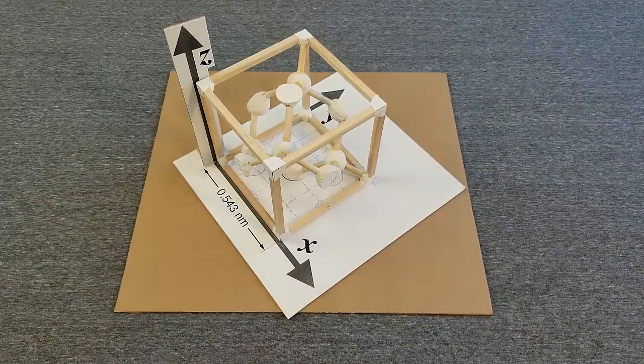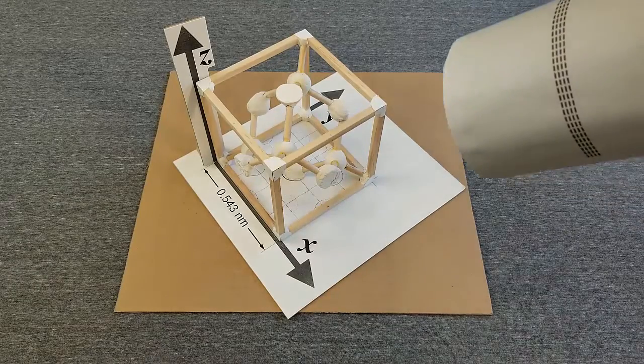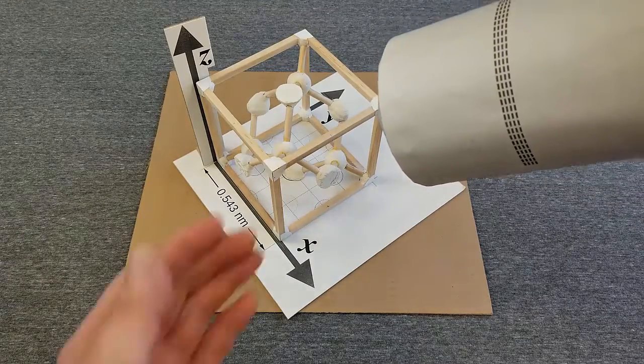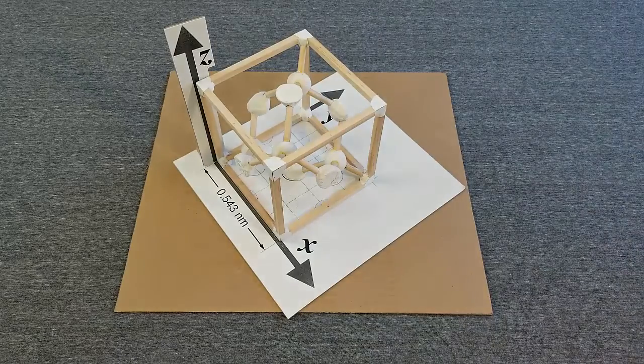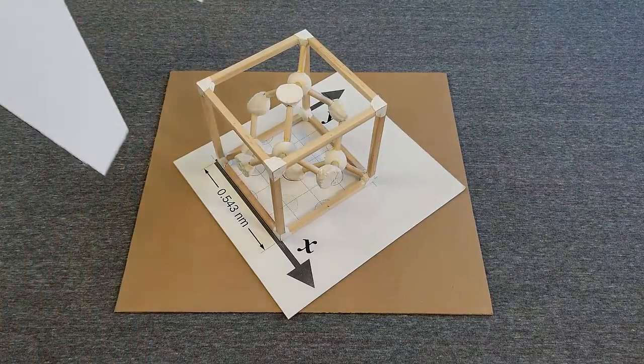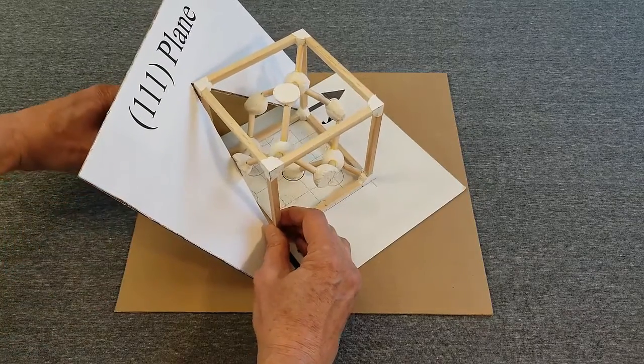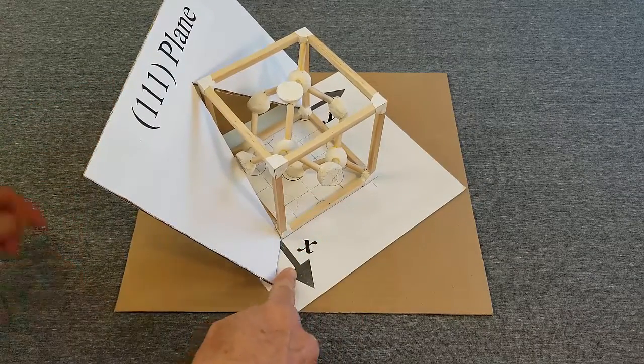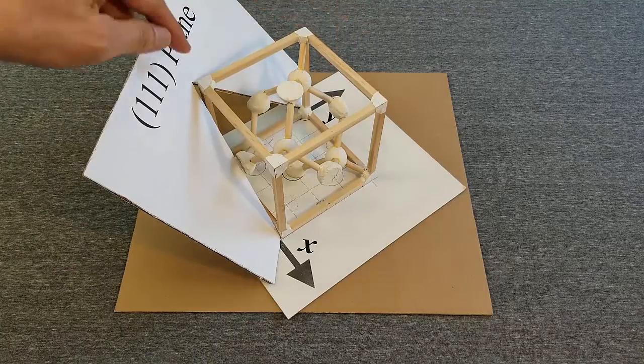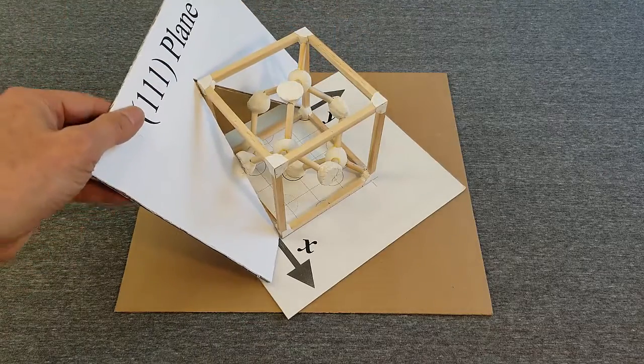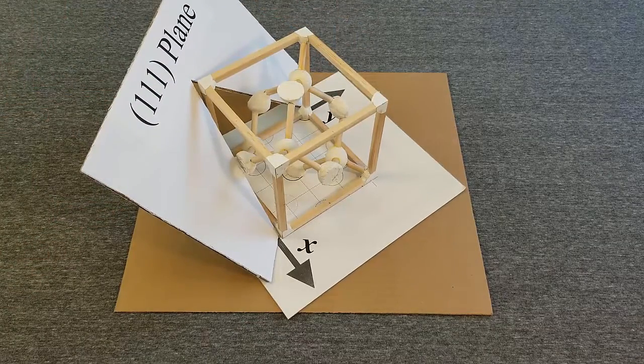For an ingot grown with its axis aligned with the long diagonal through the cube, each wafer sliced from the ingot has its flat surface parallel to this plane, which intersects the axes at x equal 1, y equal 1, and z equal 1. This is the 1-1-1 orientation.